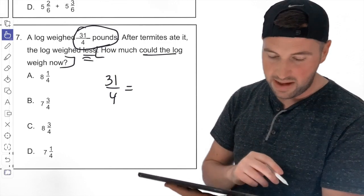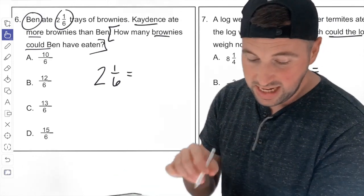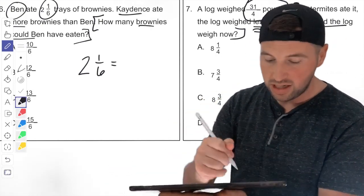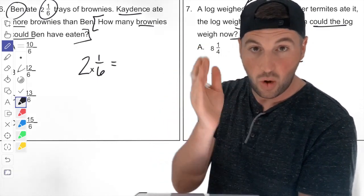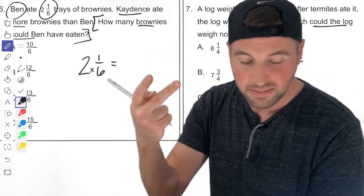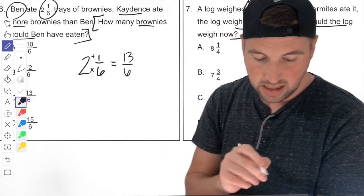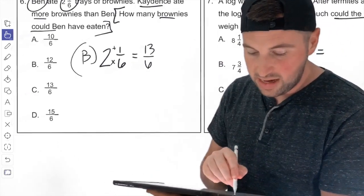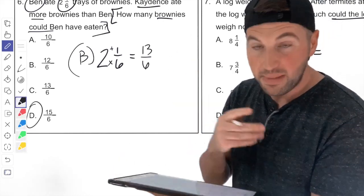Number six: how many brownies could Cadence have eaten? We need the fraction more than 2 and 1 sixth. Converting: a whole is 6 sixths, so 2 wholes is 12 sixths, plus the extra 1 sixth gives us 13 sixths. I label this as Ben's amount to help organize my work. Now I need to find the answer choice that is more than 13 sixths. Looking through the options — the answer is letter D.